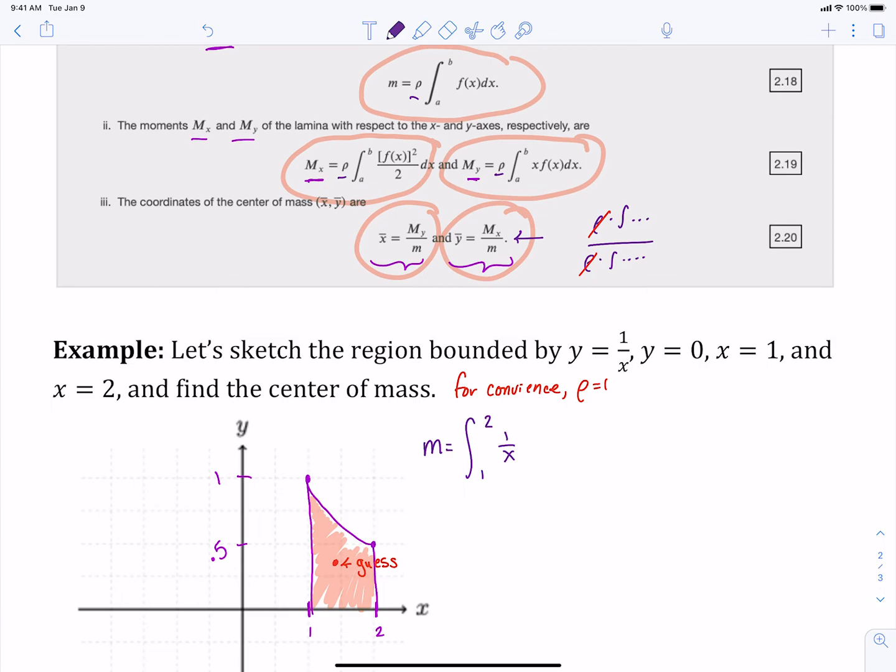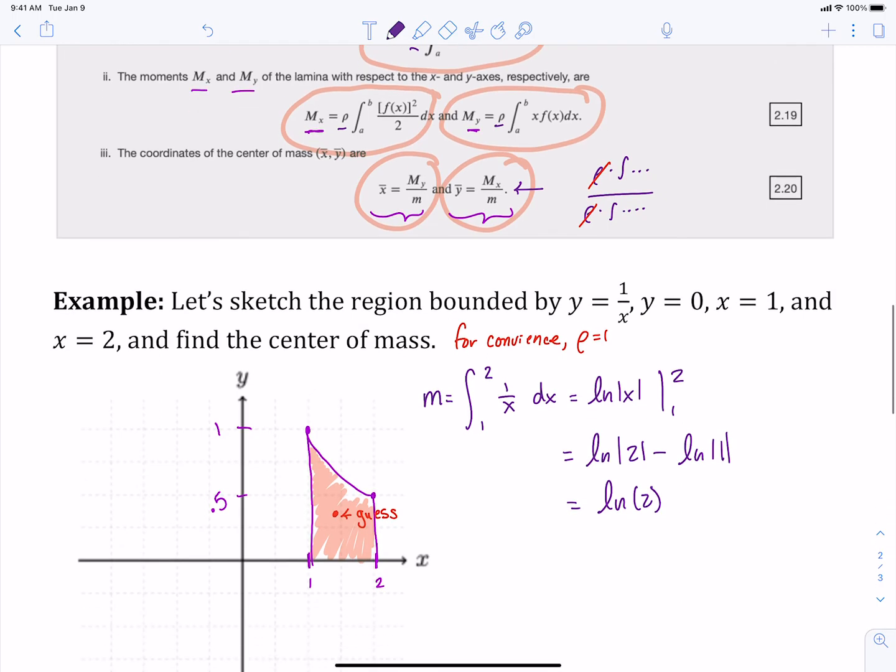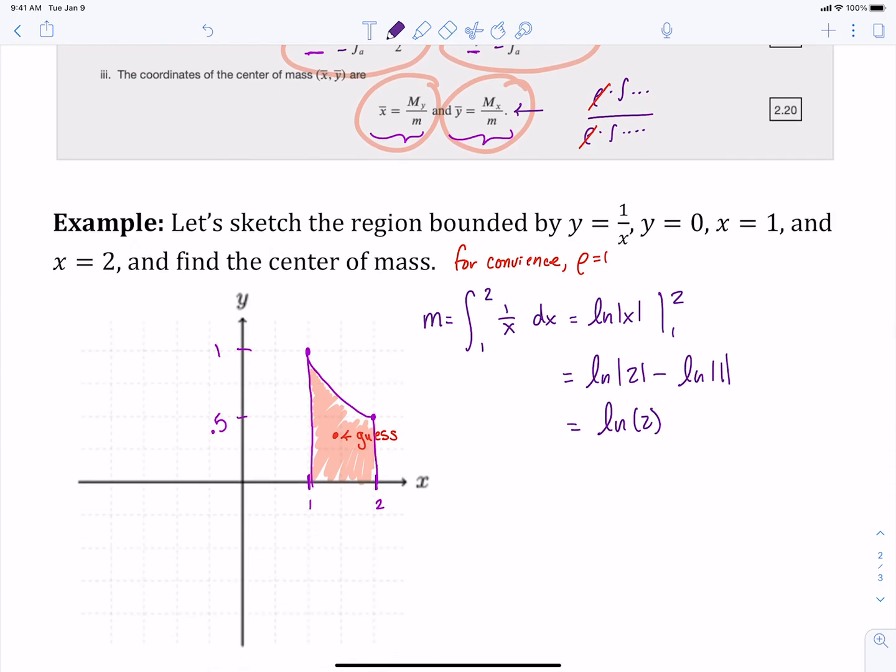So back to our integral. We've got the integral from 1 to 2 of our function. So we can do this. We've taken integrals like this before. This one is natural log from 1 to 2. So we get natural log of 2 minus natural log of 1, natural log of 1 is 0. So we get natural log of 2. So that's our total mass of our lamina.